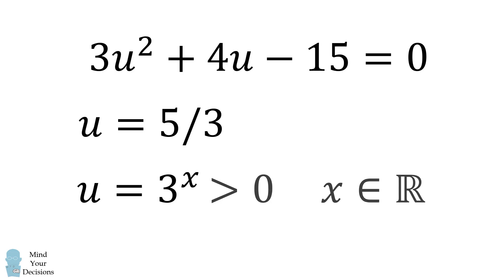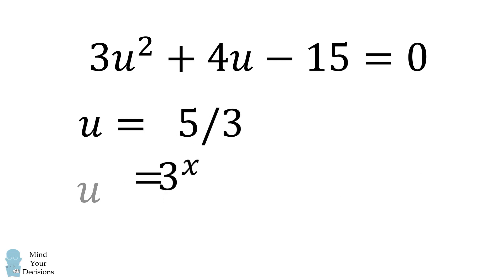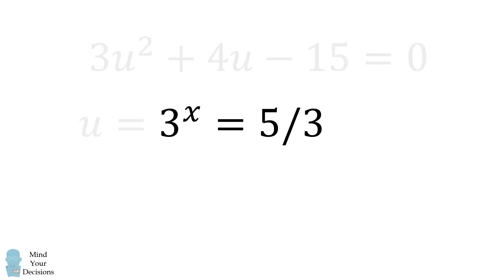We thus have u is equal to 5 over 3, and u is equal to 3 to the power of x. Thus 3 to the power of x is equal to 5 over 3. We now need to solve this equation for x. We'll take the natural log of both sides.